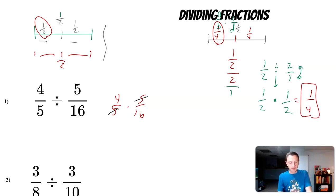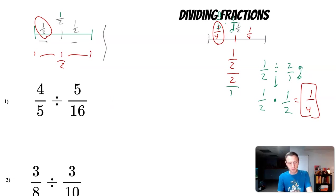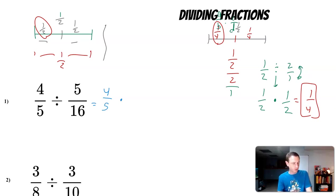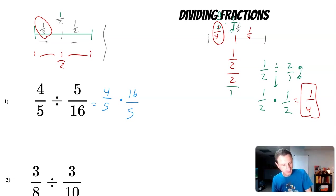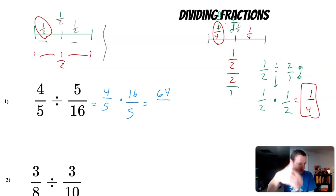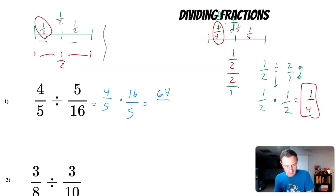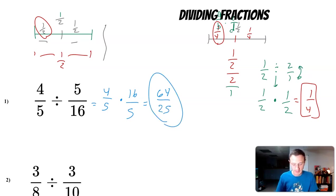I can't simplify yet while it's still a division problem. Even though if it were multiplication I'd notice a five on top and bottom, and four on top and sixteen on bottom, I can't do that with division — it has to be a multiplication question first. So I take four fifths, change division to multiplication, and take the reciprocal of the second fraction, giving sixteen over five.